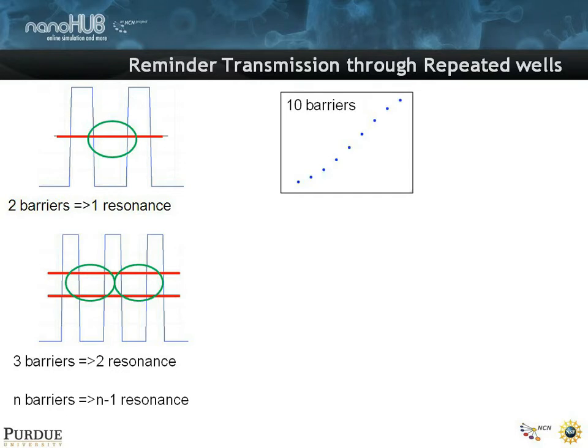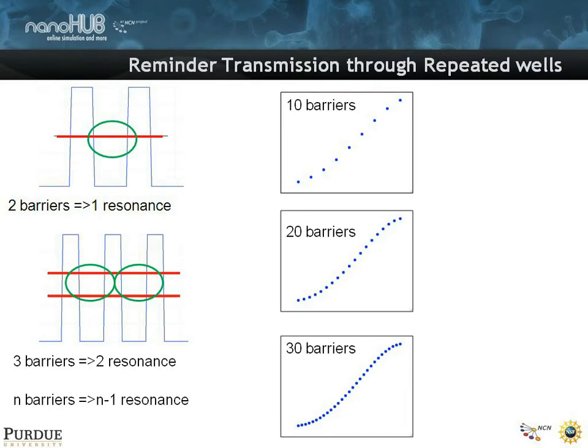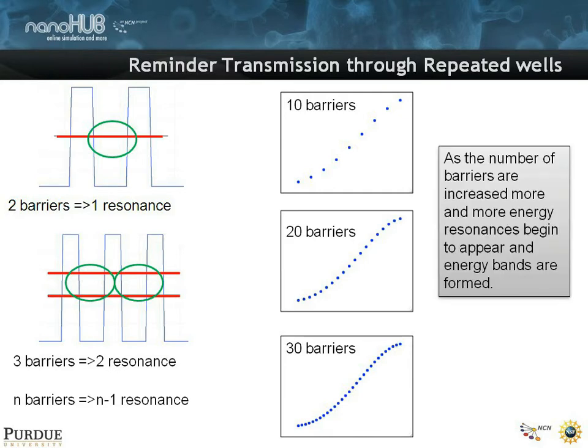If you start to plot them for 10 barriers, 20 barriers, or 30 barriers, you can see if you just plot the energy versus the number of resonances that occur, you see bands evolving or developing. So as the number of barriers are increased, more and more energy resonances begin to appear, and these bands are formed.